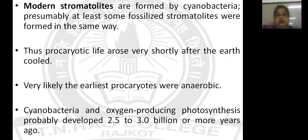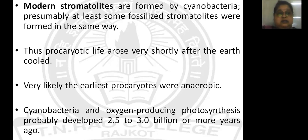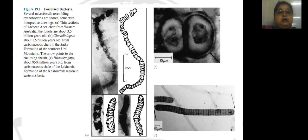The first prokaryotic life form must have originated immediately. It is very likely that the earliest prokaryotes were anaerobic, because there was no molecular oxygen available in free form. Cyanobacteria and other oxygen-producing photosynthetic bacteria must have evolved much later, near about 2.5 to 3 billion years or maybe more. The fossilized imprint found in the net of the stromatolite quite resembles the filament structure of prokaryotic bacteria, with a similarity to cyanobacteria.